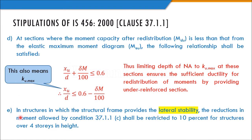The last clause states: in structures where the structural frame provides lateral stability — that is, structures designed against wind or earthquake loads — the reduction in moment allowed by Clause 37.11C shall be restricted to 10%, not 30%. This is also mentioned in IS 13920. So when lateral loads govern the design, the maximum permissible redistribution is limited to 10%.